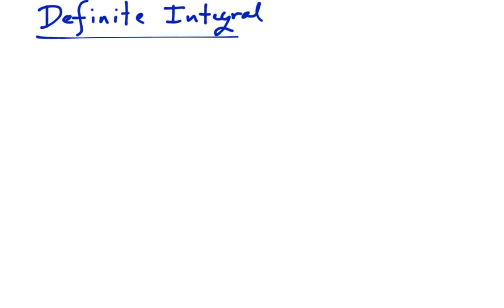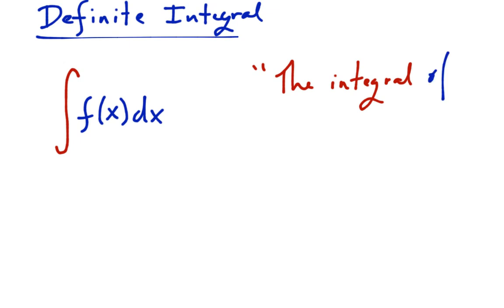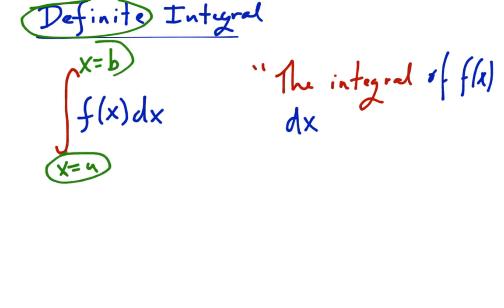I mentioned this thing called a definite integral, and you're probably like, what the heck is that? Well, here's what a definite integral is. We start with this elongated s thing, and it's called the integral. In calculus we integrate functions, so it's going to be the integral of f of x dx. So this is how we say it, the integral of f of x dx. And the thing that makes it a definite integral is that there are limits of integration, in this case, from x equals a to x equals b.